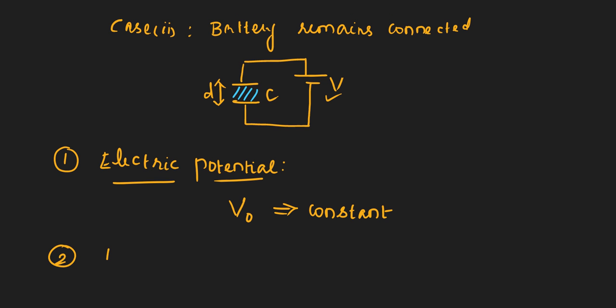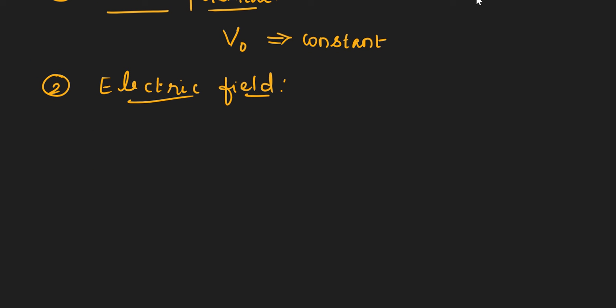Now let's write electric field. There is a relation between E and V. We can write E equals V divided by D. V is the same, so it will be V0 only because before and after it is the same. So which means that V0 divided by D is E0 only. So E0 is also constant. Electric field also doesn't change.